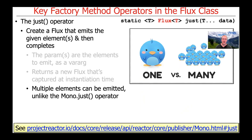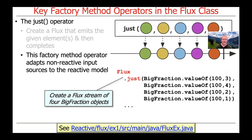Multiple elements can be emitted, unlike the Mono just operator. Mono will just emit one element, whereas Flux can emit many elements with the just operation. This factory method is commonly used to adapt non-reactive input sources into the overall reactive model.